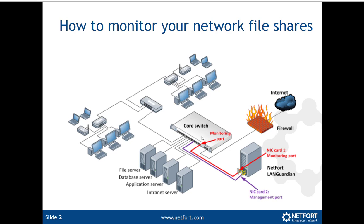To do that, you just need to set up what is known as a span port or mirror port, or even use a network tap. The idea is, wherever your servers are connected — so your file server would be your focus — locate that switch and on that switch you can set up a span port. That span port allows you to get a copy of the data that is going to and from the file server, and a copy of that information is sent out to a separate port.